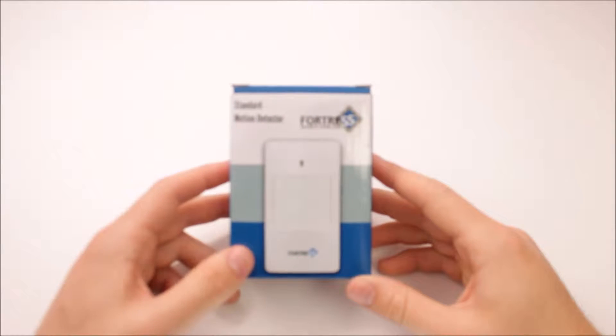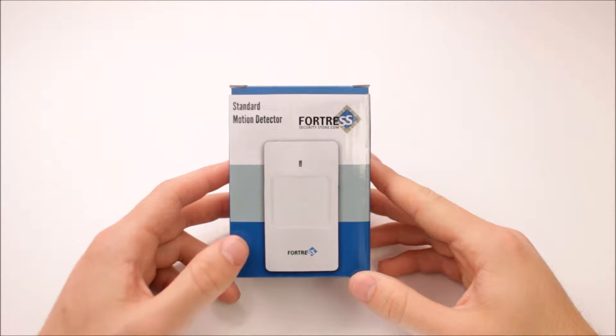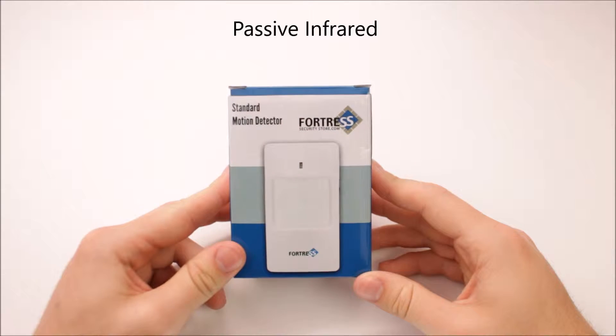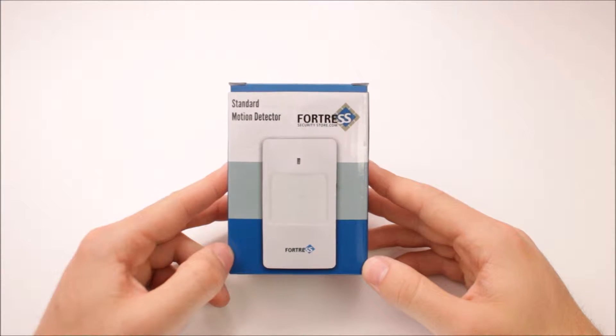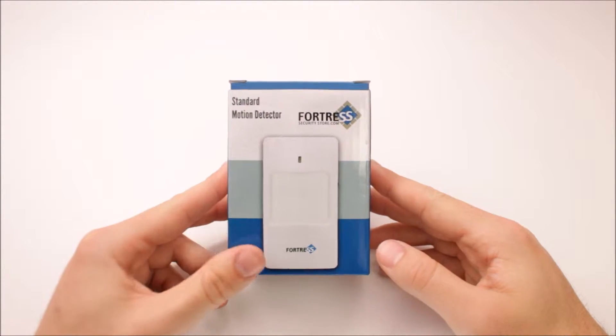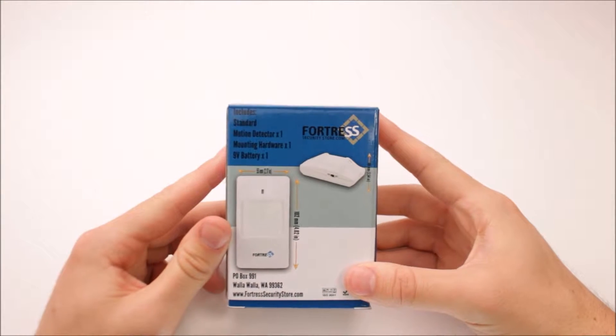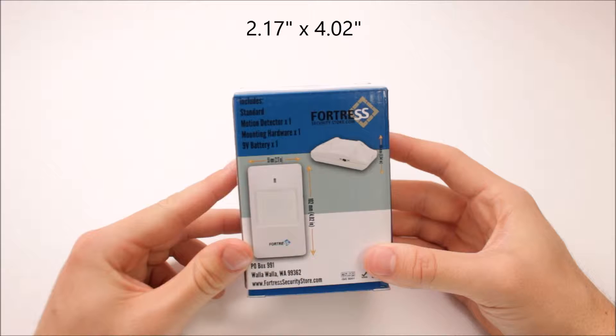Hi there, this is Eli with Fortress Security Store, and this is our SO2 GSM motion detector. This is called a PIR motion detector - passive infrared - so it's triggered when it detects a heat signature. We'll go over placement and best places to put that. For now, let's go over the dimensions. It's 2.17 by 4 inches, pretty much 4.02.